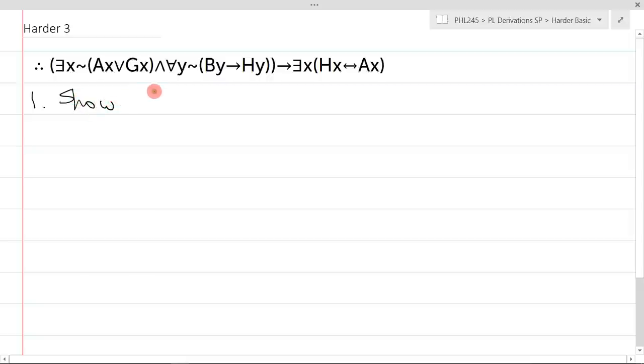So this is a theorem, so unfortunately, yes, I have to do all this writing just to get the first line. So there exists X negation AX or GX, and for all Y, negation BY arrow HY, double closed bracket. Therefore, there exists X HX biconditional AX.